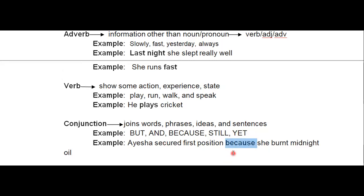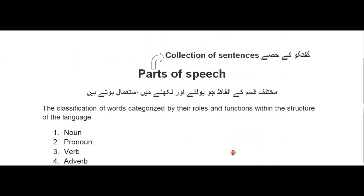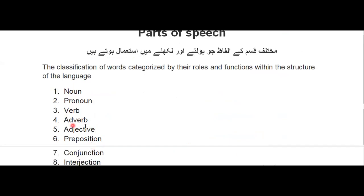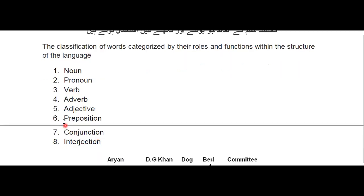So in today's first part, I have covered noun, pronoun, verb, adverb, adjective, and conjunction. The two remaining parts of speech are preposition and interjection. Interjection I have already explained thoroughly in the active/passive and direct/indirect lectures, including its kinds and how it's used in grammar. For preposition, inshallah in the next lecture we will start with preposition and understand it thoroughly.